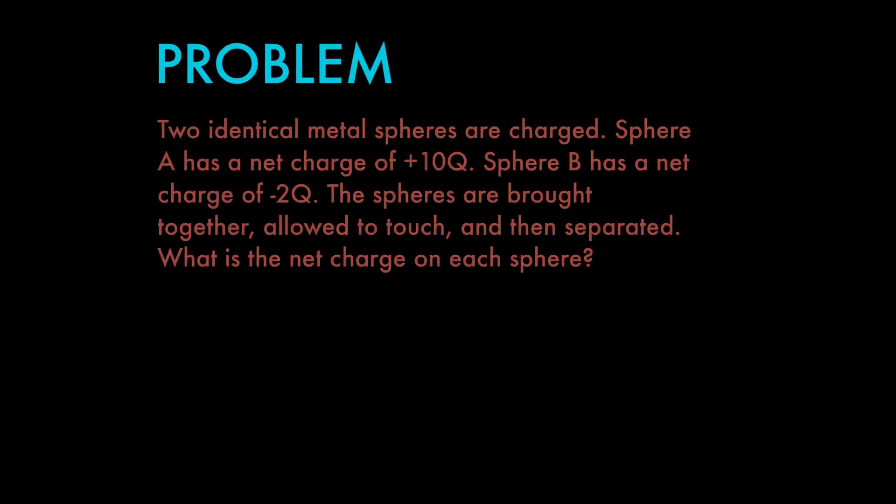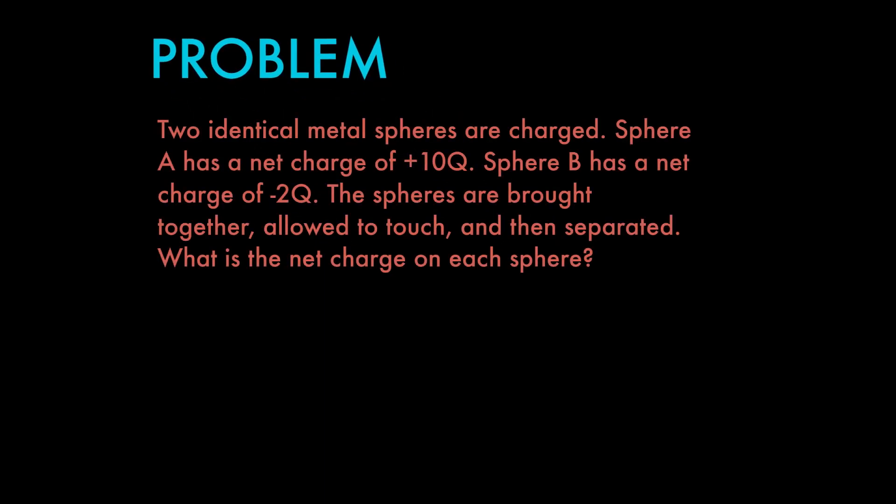Now let's take a look at an example problem. Two identical metal spheres are charged: sphere A has a net charge of positive 10, and sphere B has a net charge of negative 2. The spheres are brought together, allowed to touch, and then separated. What is the net charge on each sphere? For reference, Q is the letter we use to represent charge. Take a second to pause the video, think about the answer, and when you're ready come back.